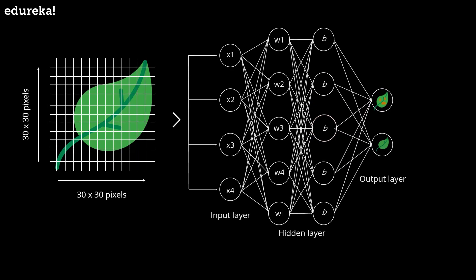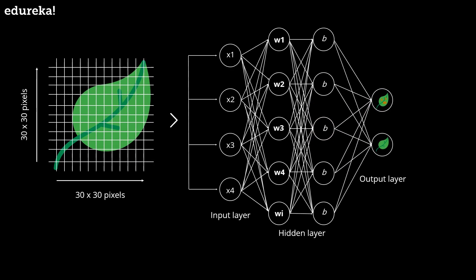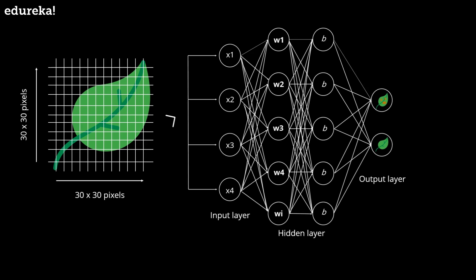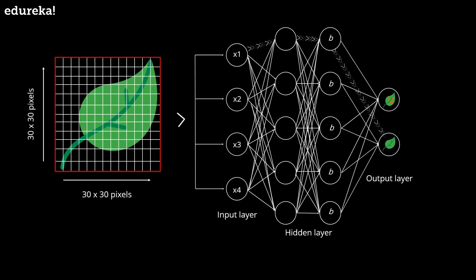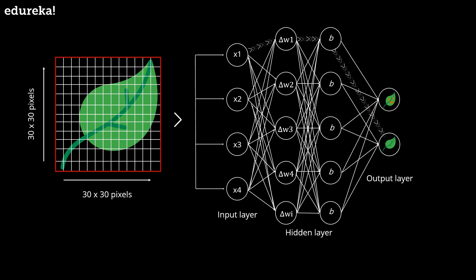Initially, while designing the neural network, we initialize weights to each input with some random values. These weights denote the importance of each input variable. Therefore, if we propagate backward in a neural network and compare the actual output to the predicted output, we can readjust the weights of each input in such a way that the error is minimized. This results in a more accurate output — and this is exactly what back propagation means.